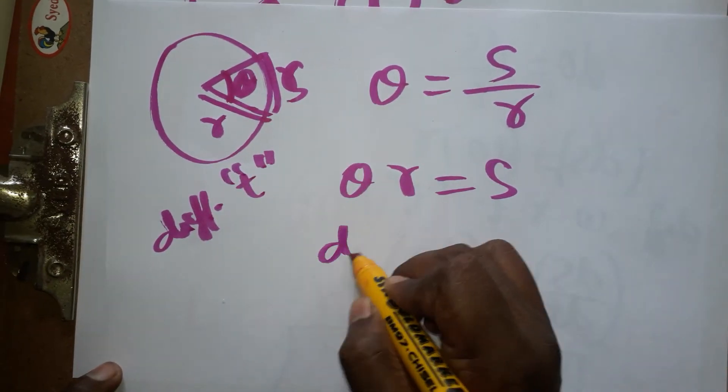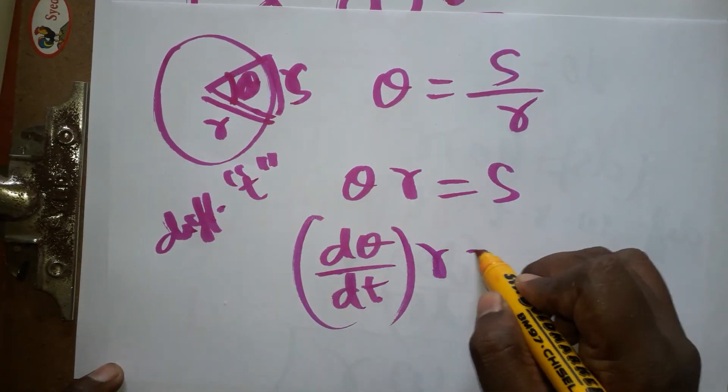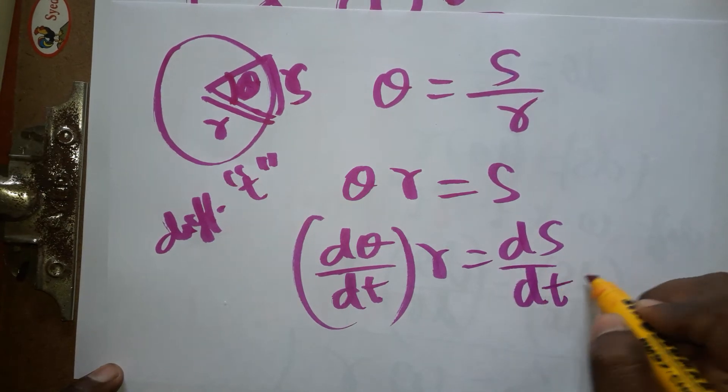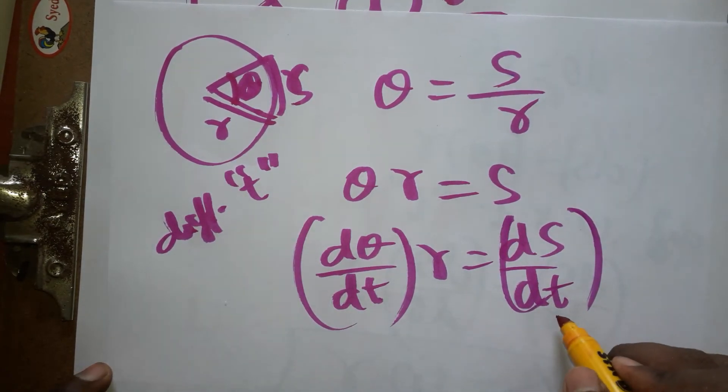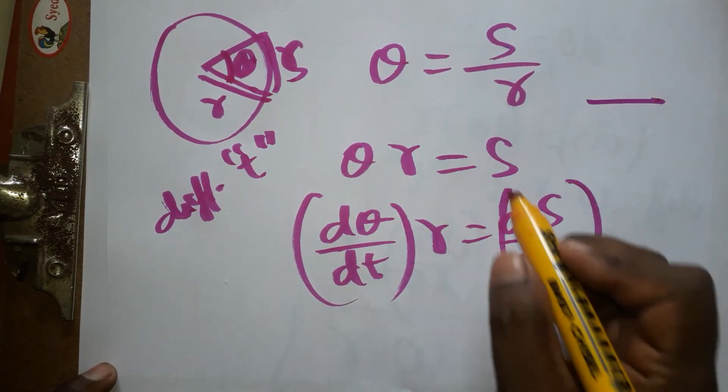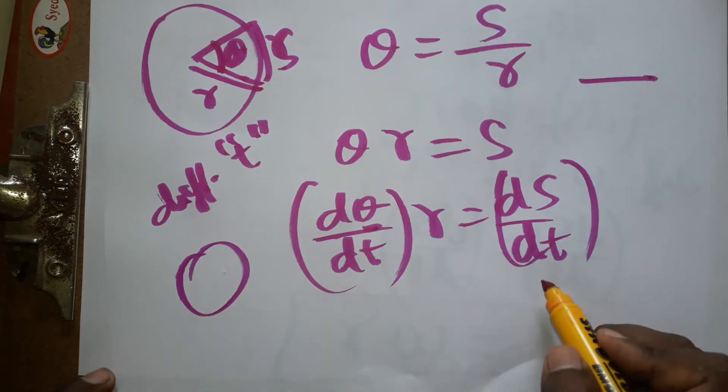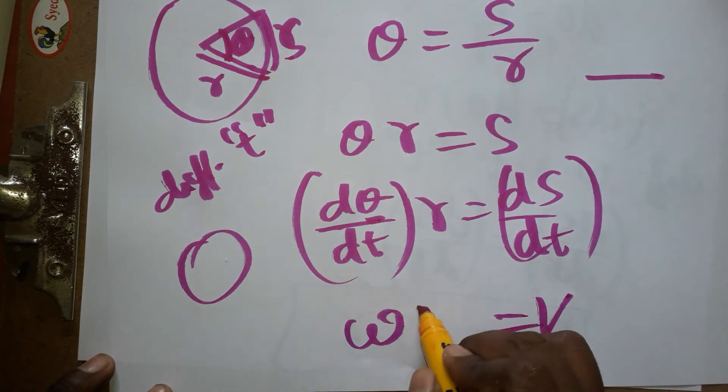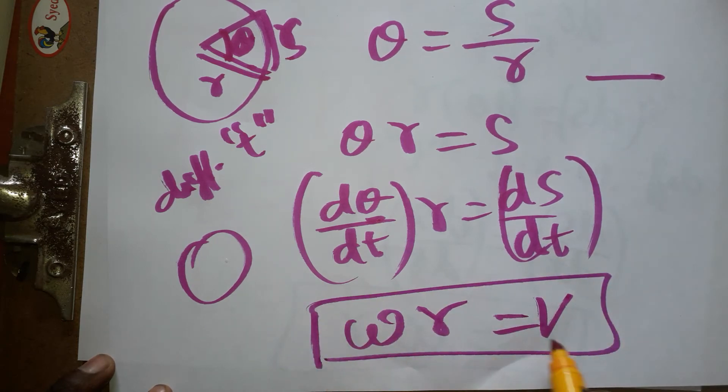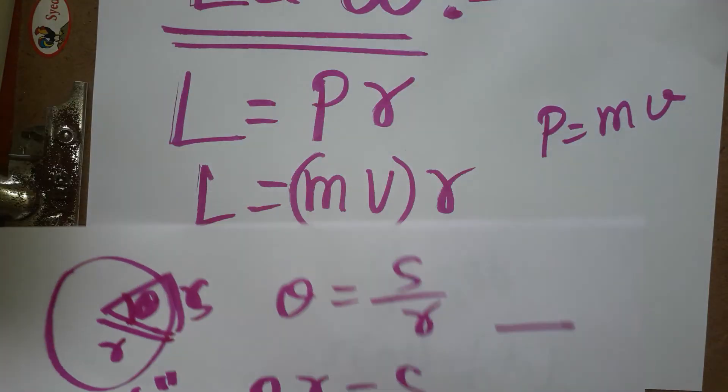So displacement by time, linear displacement by time, this is going to be linear motion and this is going to be rotational motion. So this velocity is equal to omega times r. So velocity is equal to omega times r. Now I got velocity is equal to omega times r.